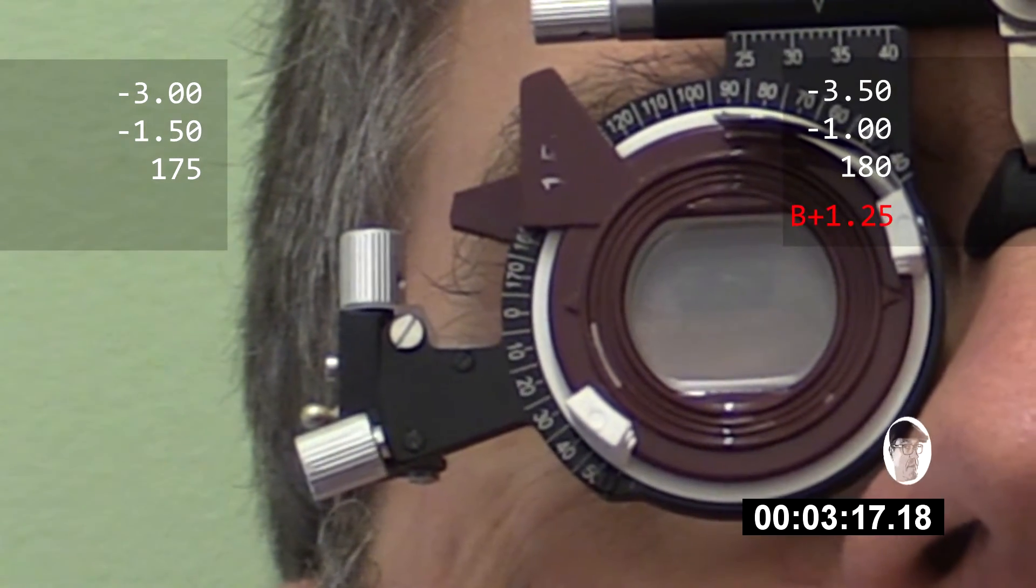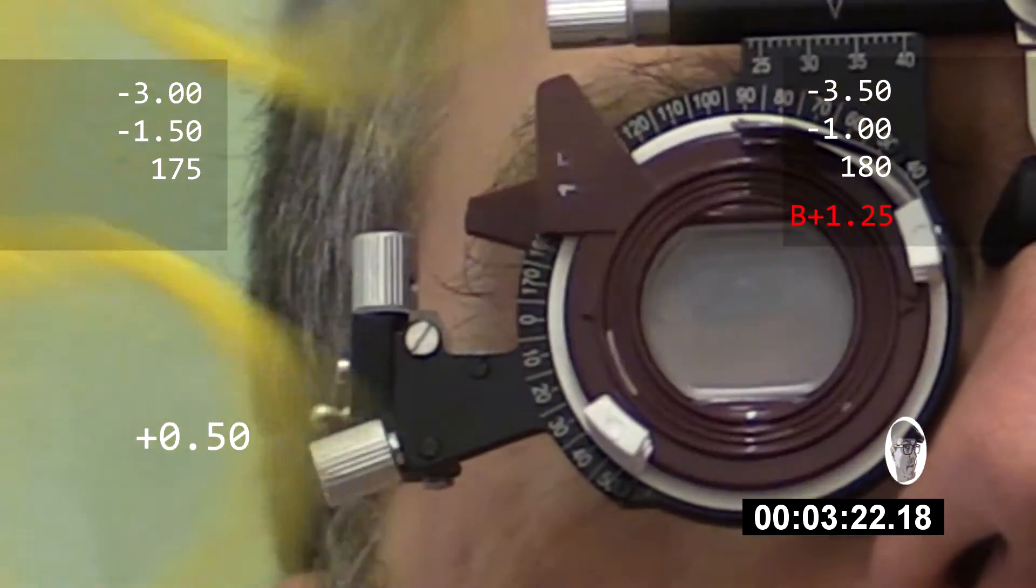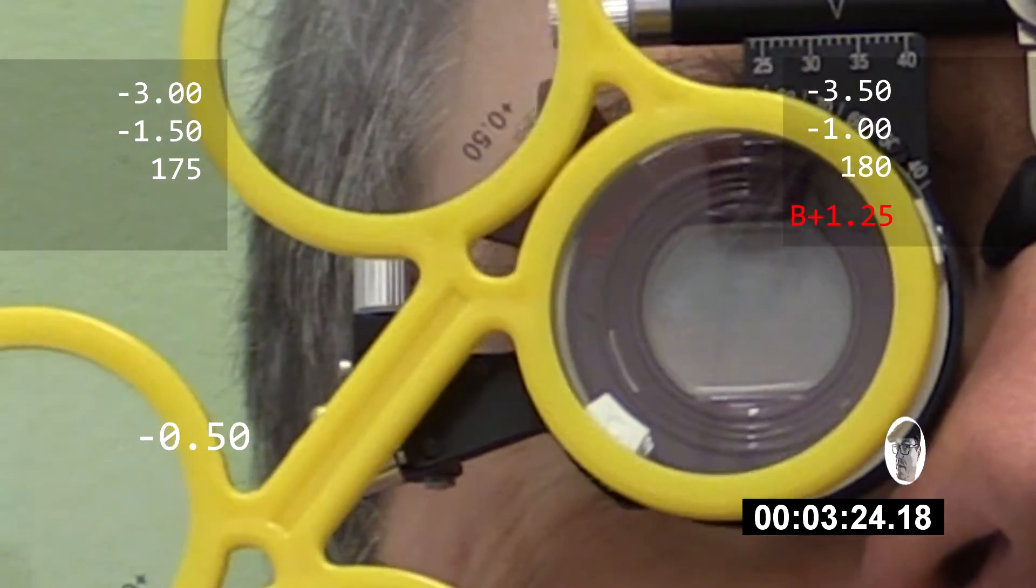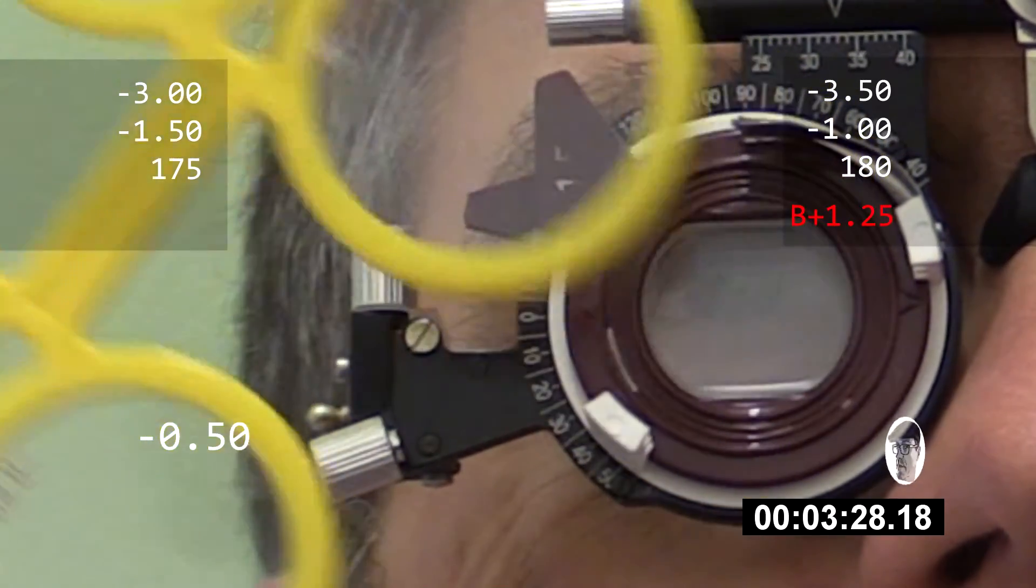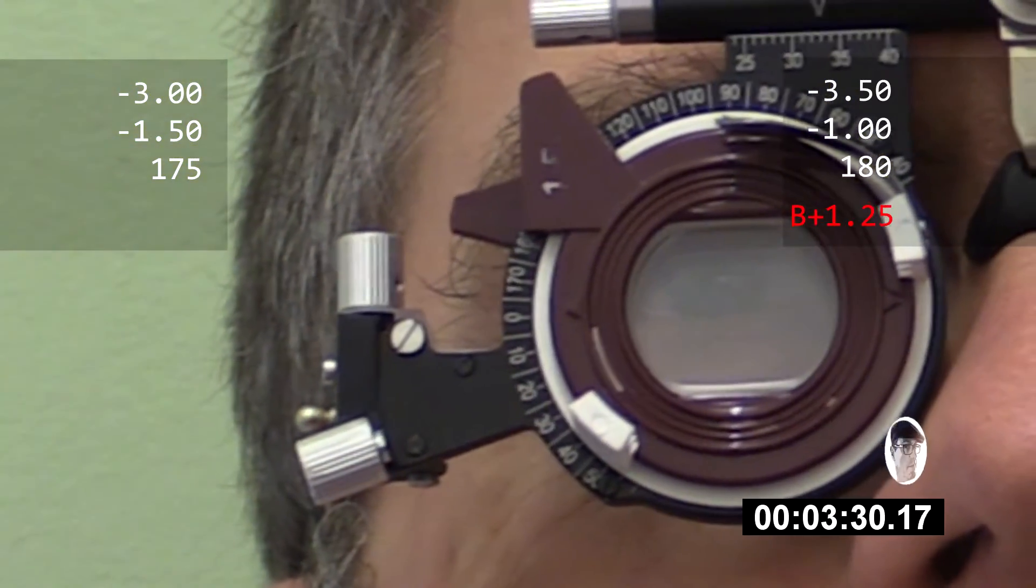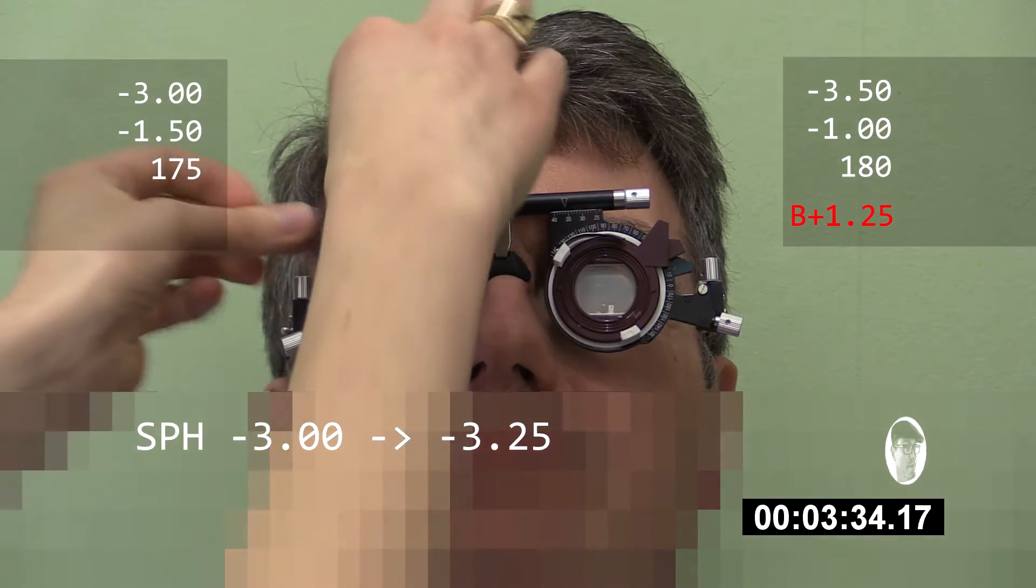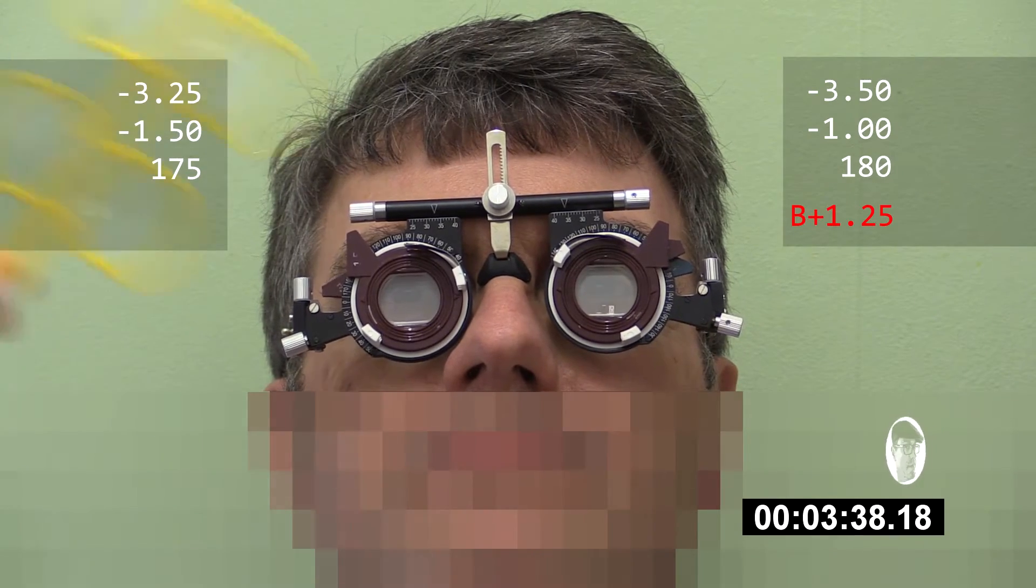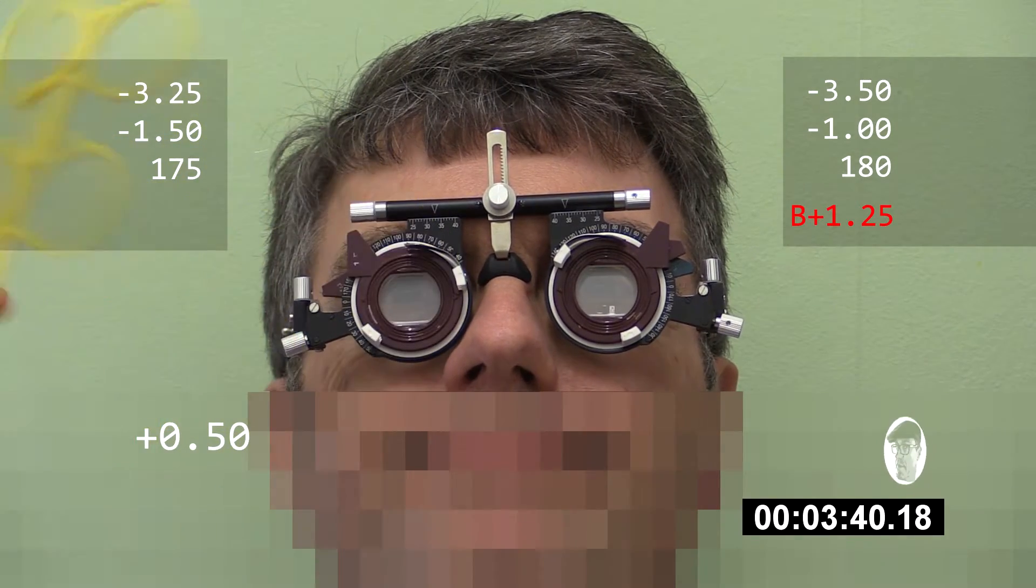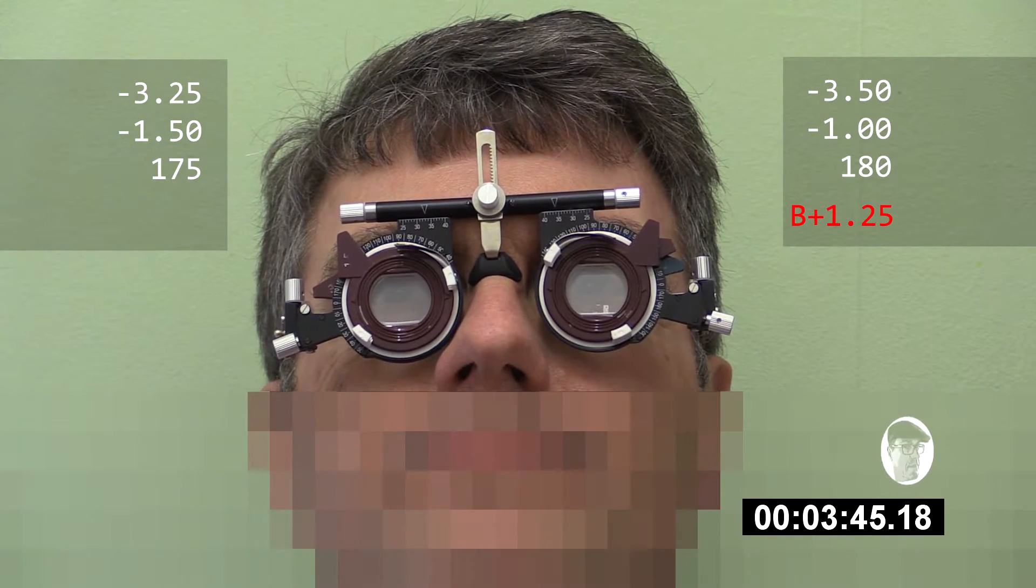And looking back at the chart of the smallest line that you can see, is there any clearer with, without, and with, or without? I can show you that again. With, without. Maybe slightly with, yeah. Just that slight bit. And with, without, and with, without. Perfect.